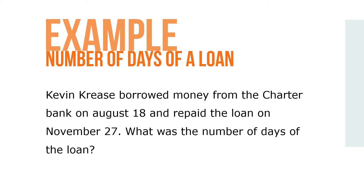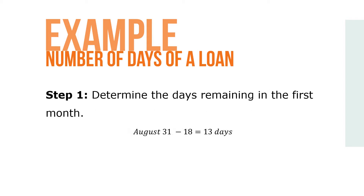Here's an example. Kevin Kreese borrowed money from Charter Bank on August 18th and repaid the loan on November 27th. What was the number of days of the loan? Step one: determine the days remaining in the first month. August has 31 days, so 31 minus 18 equals 13 days.